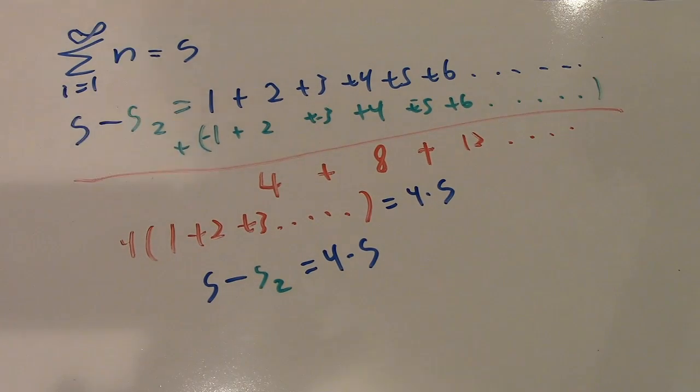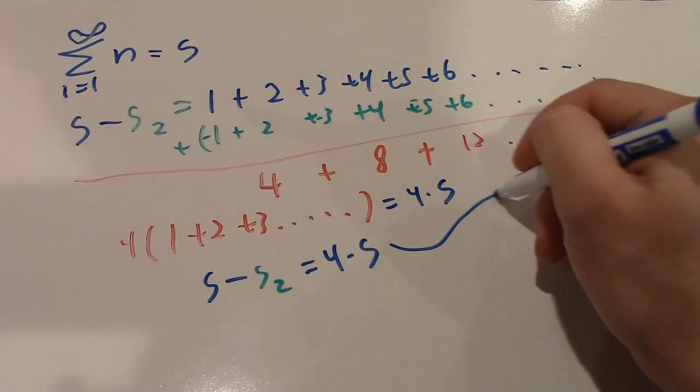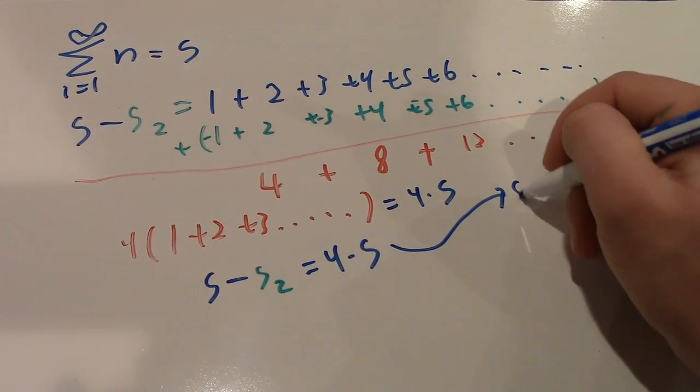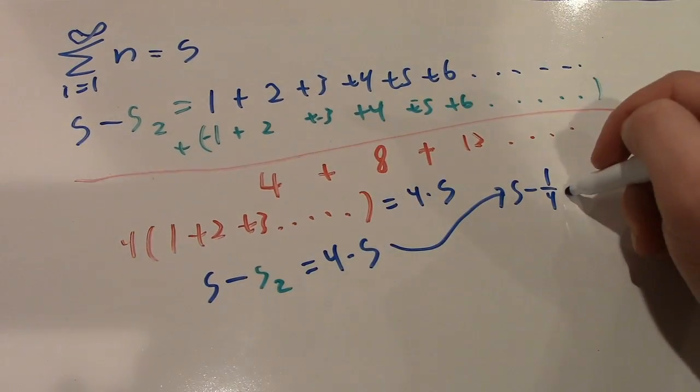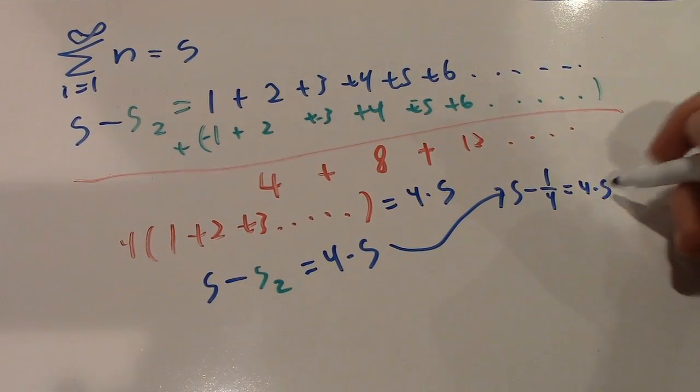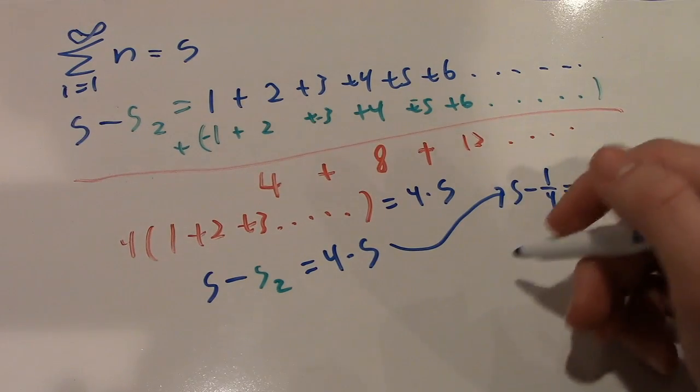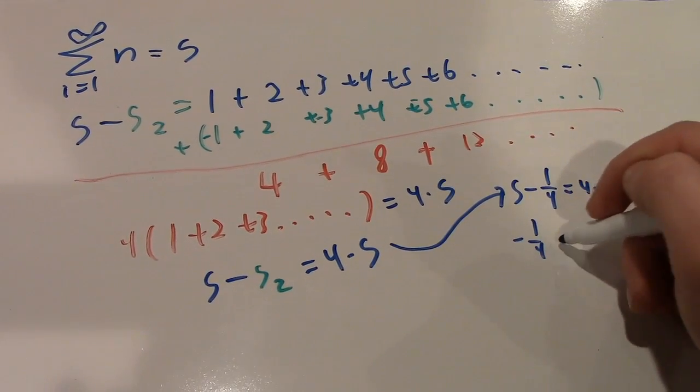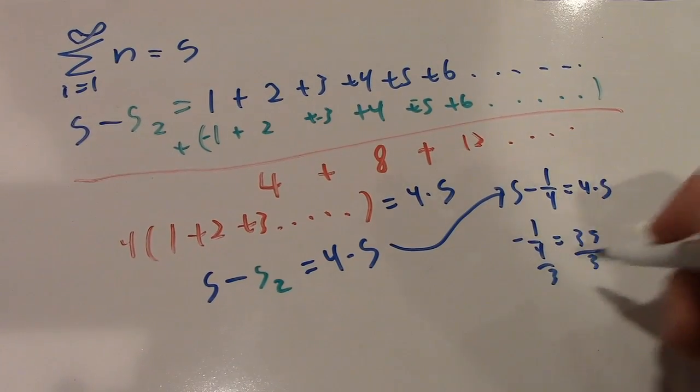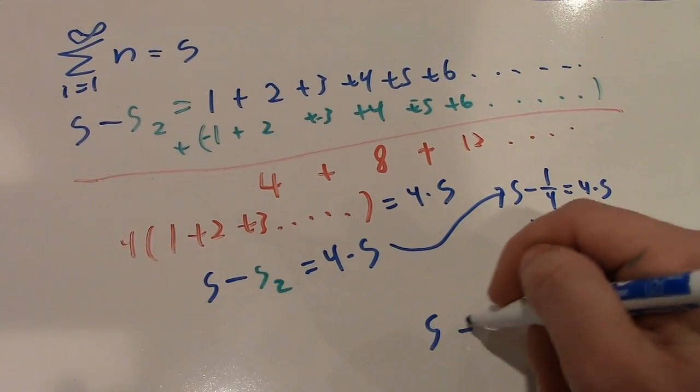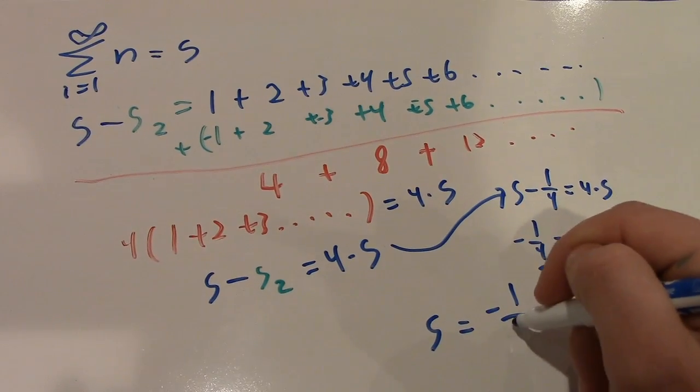Now, since we know that our second sum is equal to 1 fourth, we can solve this pretty easily. So, just going over here, we have our main sum minus 1 fourth, that was our second sum, and that equals 4 times our main sum. So, subtracting S from both sides, we have negative 1 fourth equals 3S. Dividing both sides by 3, we find that S equals negative 1 twelfth.